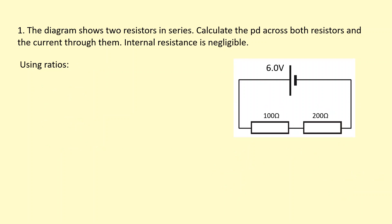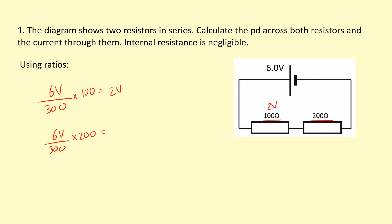This is the same question, but I'm going to find the PD by thinking about it differently. The potential difference will be shared in the ratio of the resistance of each component — in this case, a ratio of 100 to 200. So I take the total voltage of 6 volts, chop it into 300 pieces (the total resistance), and give 100 of those pieces to the 100 ohm resistor. That gives me 2 volts. Then take 200 of those pieces for the 200 ohm resistor, giving me 4 volts.